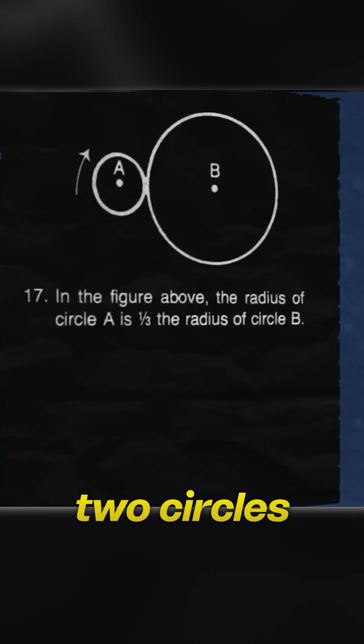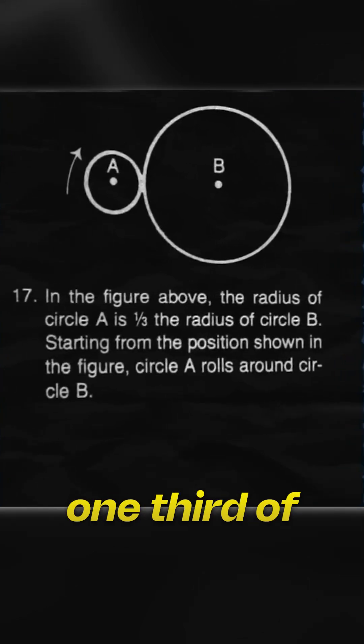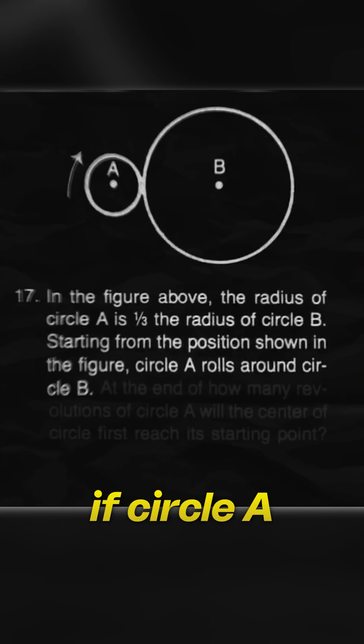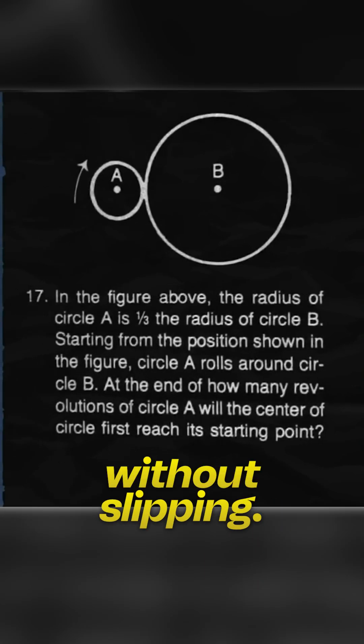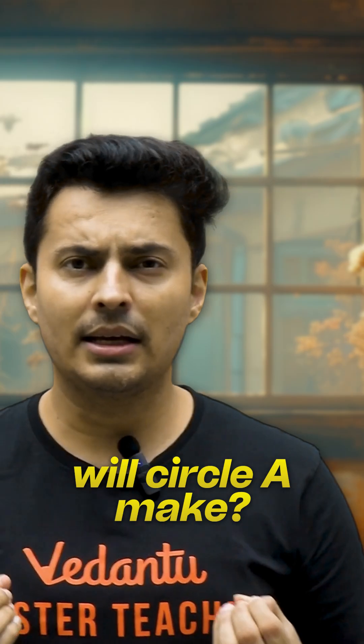The problem showed two circles. Circle A with radius one third of circle B. If circle A rolls around circle B without slipping, how many full revolutions will circle A make?